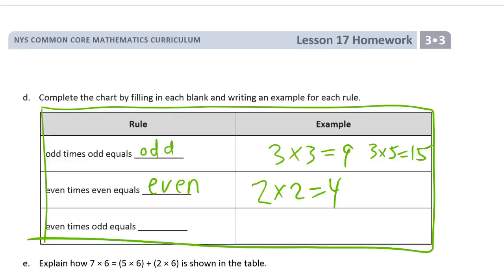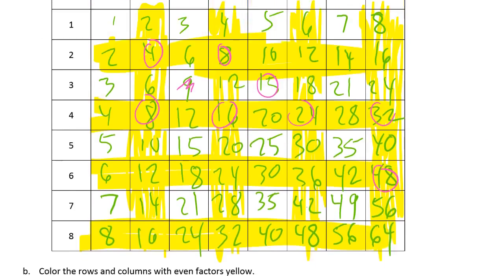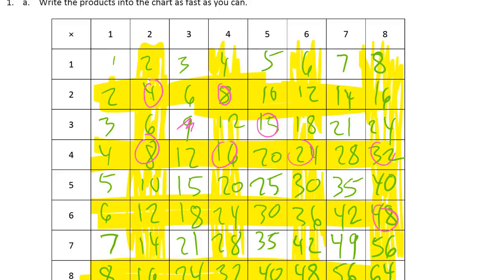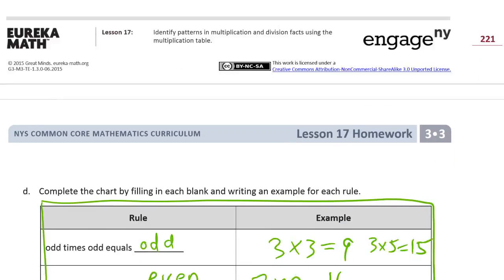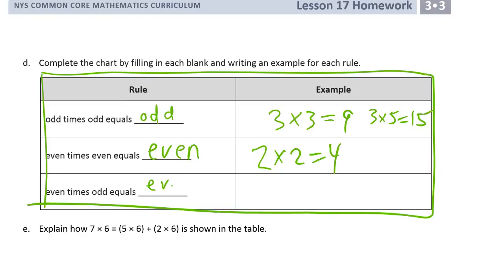Even times odd — where can we find that? Two times three is six, two times five is ten, two times seven: two is even and seven is odd, and that gives fourteen. So it looks like that's always even. Even times odd is even, and we can give the example two times five equals ten.